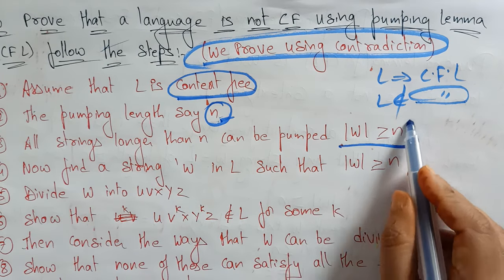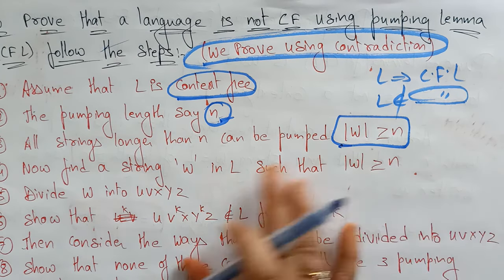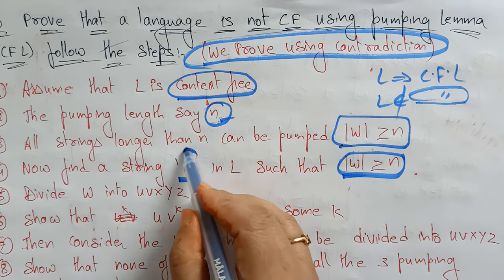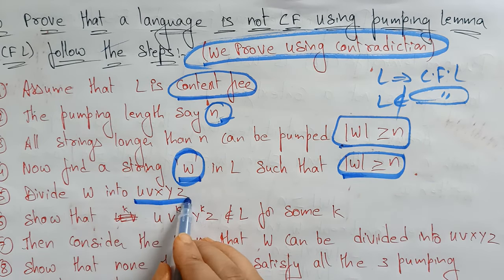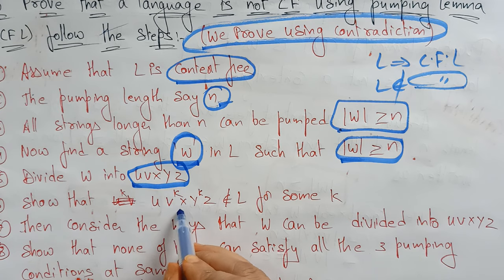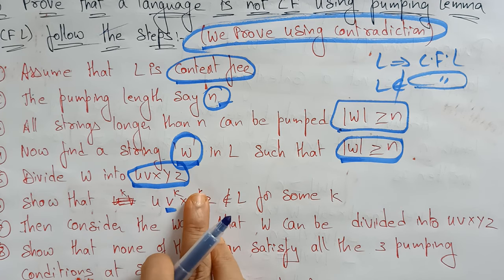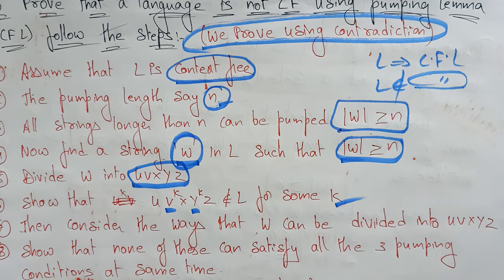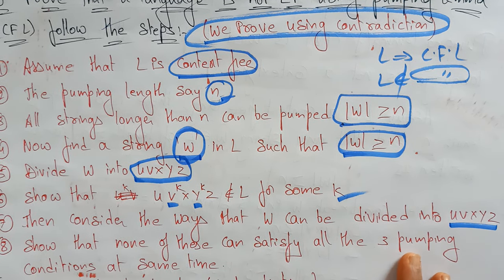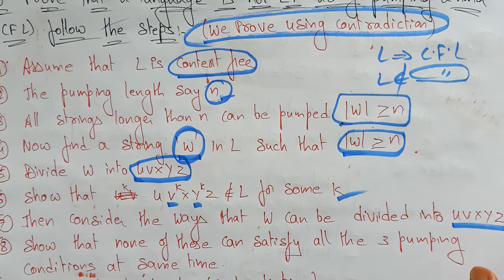Let the pumping length be n, so all strings longer than n can be pumped, meaning |w| ≥ n. Find a string w in L such that |w| ≥ n. That string is then divided into five parts u v x y z, and we must show that u vᵏ x yᵏ z does not belong to L for some value of k.